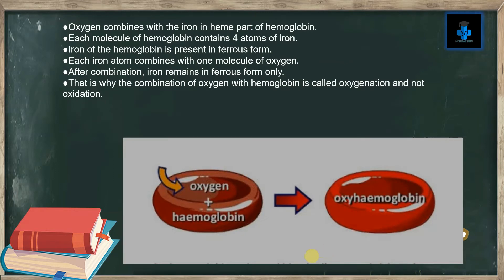Oxygen combines with the iron in the heme part of hemoglobin. Each molecule of hemoglobin contains four atoms of iron, present in ferrous form. Each iron atom combines with one molecule of oxygen. After combination, the iron remains in ferrous form — that is why the combination of oxygen with hemoglobin is called oxygenation and not oxidation.